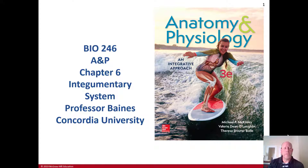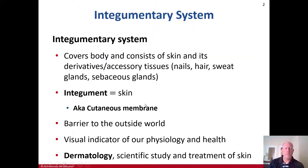We're now talking about Chapter 6 for Biology 246, Anatomy and Physiology, Concordia University, on the integumentary system. The integumentary system involves the integument, which is the skin, covering the body and consisting of the skin and its derivatives or accessory tissues: nails, hair, sweat glands, and sebaceous glands.